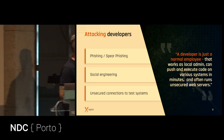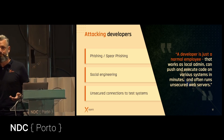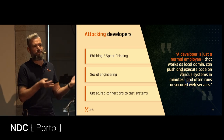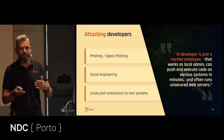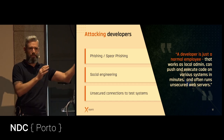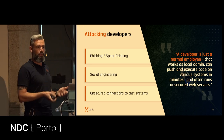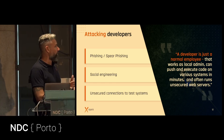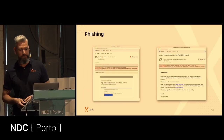For example, unsecured connections to test systems — a lot of customers still have web servers in-house that are not secured, with basic authentication, and they send credentials to them. 'We have production that is secure, but here in the network it's not so difficult, so people can phish it.' So there are a lot of attack vectors around the developer themselves.